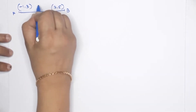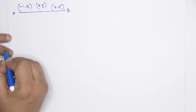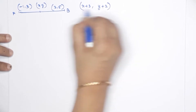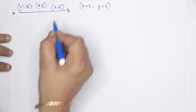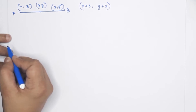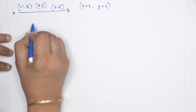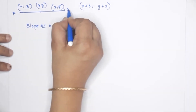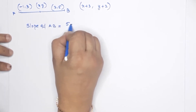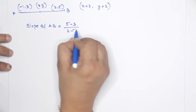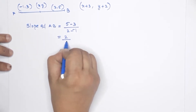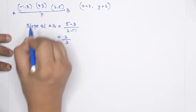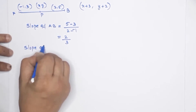The point (x, y) is on the line, and so is (x+3, y+2). Let's find the equation. Let's check: slope of AB. That is y2 minus y1: 5 minus 3 by 2 minus minus 1, that is 2 by 3. The slope is 2/3.